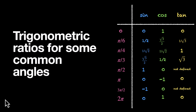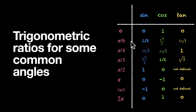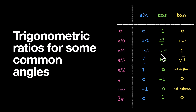In this video, we're going to look at trigonometric ratios for some common angles — angles like 0, pi by 6, pi by 4, and so on. We'll look at their trigonometric ratios: their sin, cos, and tan. We're not going to memorize these values. Using basic geometry, we'll try to prove all of these values. It's going to be a lot of fun, let's get started.